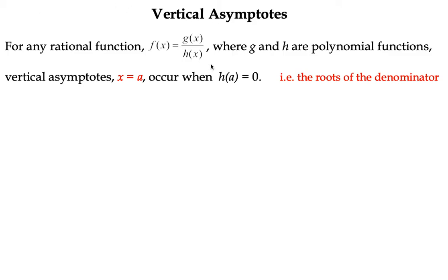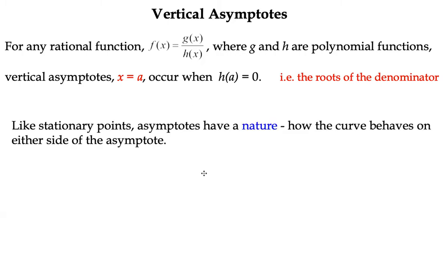For any rational function g(x) over h(x), where we're dealing with polynomial functions, the vertical asymptotes will appear when h(a) equals 0. In other words, when the denominator is equal to 0, we need to solve a polynomial equation.